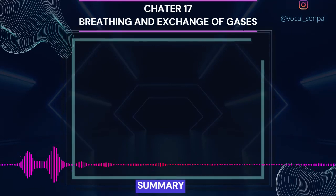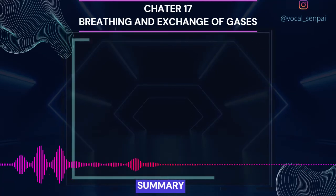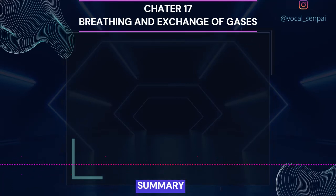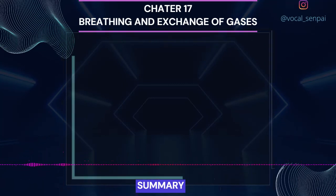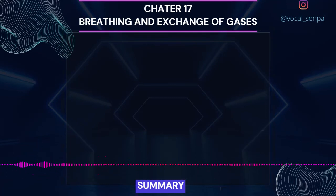Oxygen is transported mainly as oxyhemoglobin. In the alveoli where PO2 is higher, O2 gets bound to hemoglobin, which is easily dissociated at the tissues where PO2 is low and PCO2 and H+ concentration are high. Nearly 70% of carbon dioxide is transported as bicarbonate (HCO3-) with the help of the enzyme carbonic anhydrase. 20–25% of carbon dioxide is carried by hemoglobin as carbaminohemoglobin. In the tissues where PCO2 is high, it gets bound to blood, whereas in the alveoli where PCO2 is low and PO2 is high, it gets removed from the blood. Respiratory rhythm is maintained by the respiratory center in the medulla region of the brain. A pneumotaxic center in the pons region of the brain and a chemosensitive area in the medulla can alter respiratory mechanism.